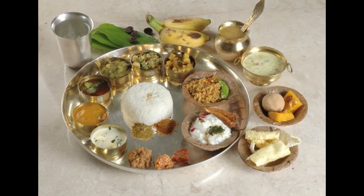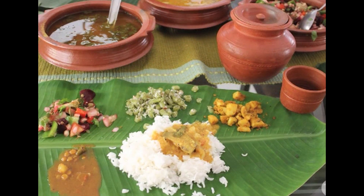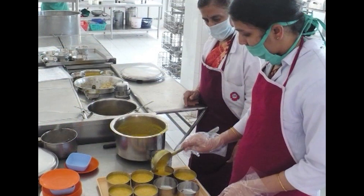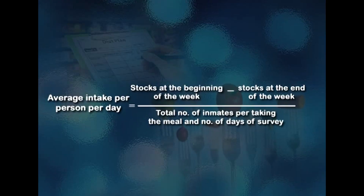The first method is called the inventory method. This method is often employed in institutions like hostels, army barracks, orphanages, and homes for the aged, where there are homogeneous groups of people taking meals from a common kitchen. In this method, the amounts of foodstuffs issued to the kitchen as per records maintained by the warden are taken into consideration. No direct measurement or weighing of food is done. A reference period of one week is desirable. This method can also be used for assessing food consumption at household levels, provided the respondent maintains a regular record of food taken.